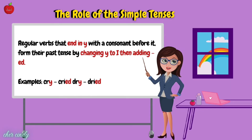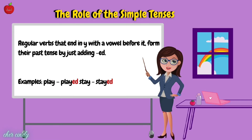Rule 3: Regular verbs that end in Y with a consonant before it form their past tense by changing Y to I then adding ED. Examples: cry → cried, dry → dried. Rule 4: Regular verbs that end in Y with a vowel before it form their past tense by just adding ED. Examples: play → played, stay → stayed.